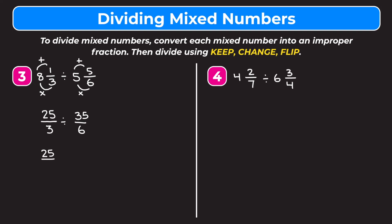Keep twenty-five thirds as it is, change division to multiplication, flip thirty-five sixths to become six over thirty-five. We can cross-reduce twenty-five and thirty-five by dividing both by five — twenty-five divided by five is five, thirty-five divided by five is seven. We can also cross-reduce three and six by dividing both by three — three divided by three is one, six divided by three is two.